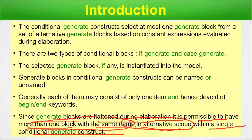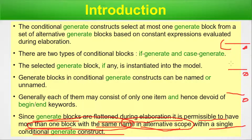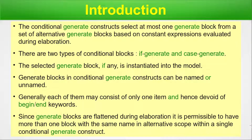Multiple blocks can have the same name, but they must be in alternative scopes — for example, scope one, scope two, and scope three each having the same block name is fine. However, you cannot have two different blocks with the same name within the same scope. These are the key rules to know before proceeding with the examples.